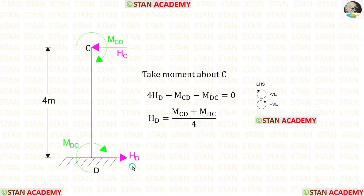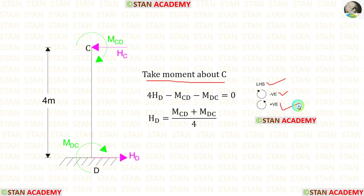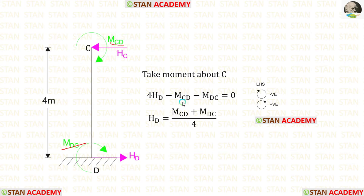Now let us take column CD and find HD. We assume that MDC and MCD are acting in the clockwise direction, and HD is acting towards the right side. Taking moments about C: we are moving towards the left-hand side, so clockwise is negative and anticlockwise is positive. HD is acting in the anticlockwise direction, so it is positive over a distance of 4. Both moments are clockwise, so both are negative. Finally, HD equals (MCD + MDC) divided by 4.